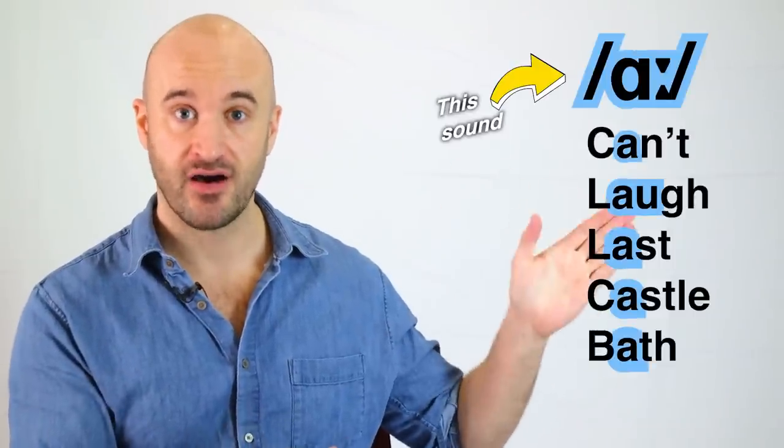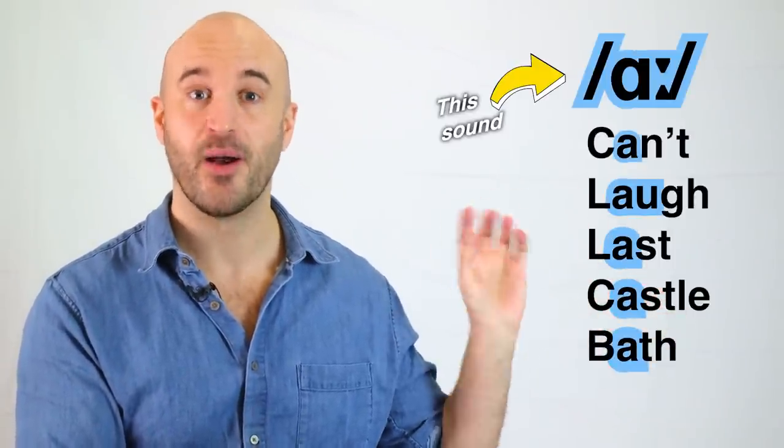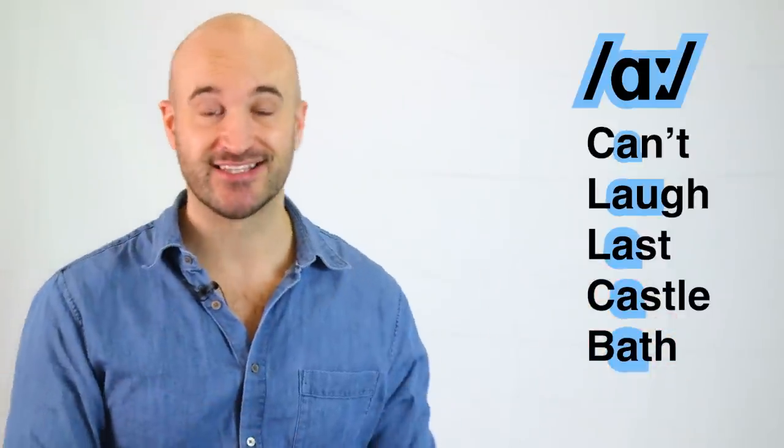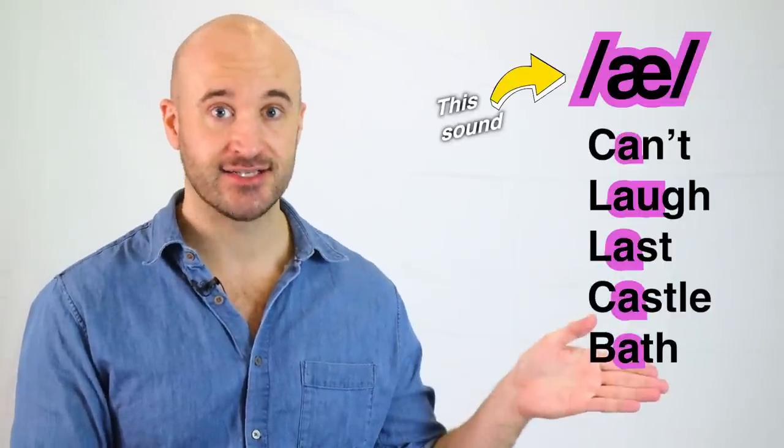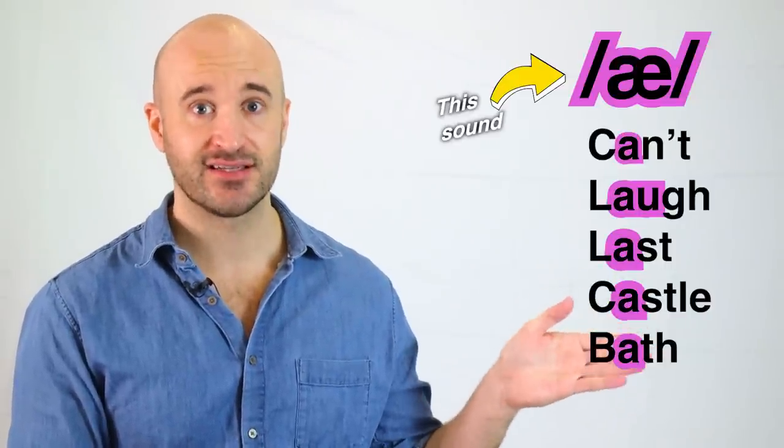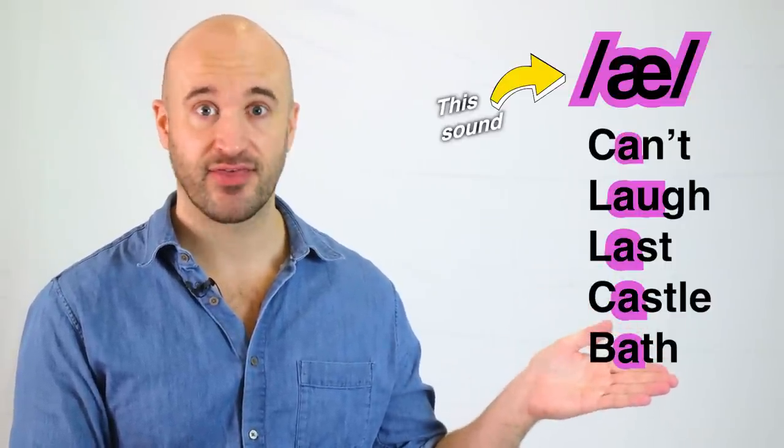Basically, words like can't, laugh, last, castle, bath are pronounced differently depending on if your accent is a southern accent or a northern accent. So in the south, we would pronounce these with an ah sound. That's this sound. Ah, can't, laugh, last, castle, bath.